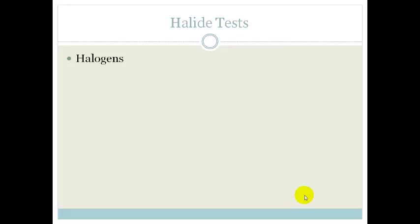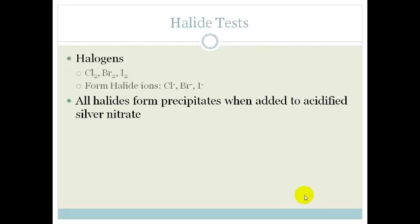So let's talk about the halide tests. The halogens are chlorine, bromine, and iodine. It's all of group 7, but we're only going to be looking at chlorine, bromine, and iodine. They form halide ions: chloride, bromide, and iodide. All halides form precipitates when added to acidified silver nitrate.